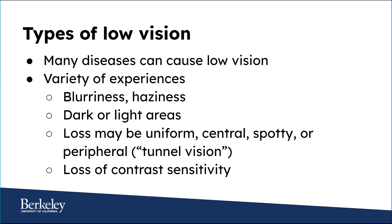There are a lot of different conditions that can cause low vision and people can have very different needs and experiences. Some people have vision that's blurry or hazy. They might experience dark spots or light spots. Others may have tunnel vision that's very clear in the center of their focus. A loss of vision may be uniform, central, spotty, or peripheral.